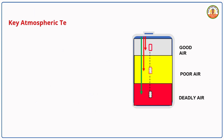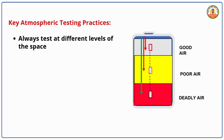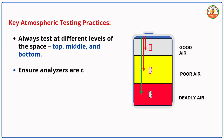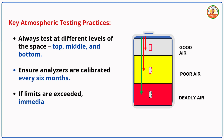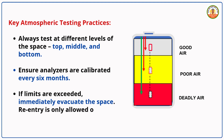Key atmospheric testing practices: always test at different levels of the space — top, middle, and bottom. Ensure analyzers are calibrated every 6 months. If limits are exceeded, immediately evacuate the space. Re-entry is only allowed once conditions are deemed safe.